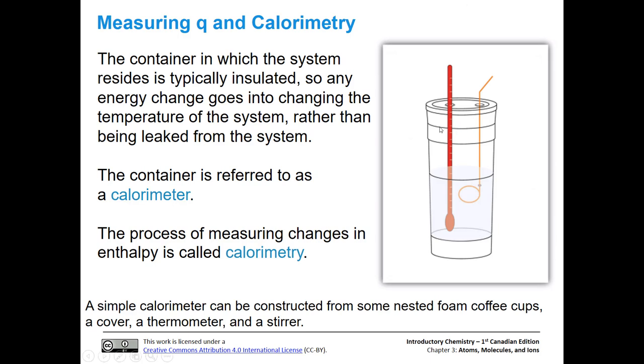So we can see here, we have a calorimeter. This is kind of a simple guy. It's two nested foam coffee cups. There's a cover there. There's a thermometer there. And then there's a stirrer, depending on what we're doing. Oftentimes, we want a stirrer. So this is a simple calorimeter.